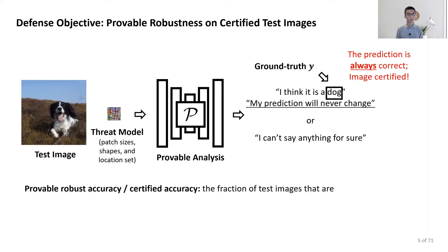We will evaluate our defense using the provable robust accuracy. That is the fraction of the test images that are correctly classified and provably robust to any adaptive attacker within the threat model. The attacker can know about our defense and have access to our model parameters.